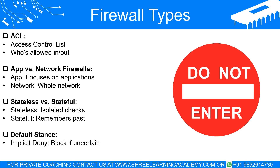Implicit Deny — the default security stance. This is the better-safe-than-sorry approach. If a data packet doesn't meet any of the allow rules, it's automatically denied. Imagine a receptionist who, when in doubt, doesn't let someone through.